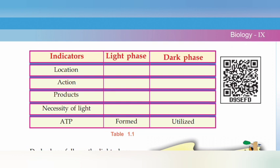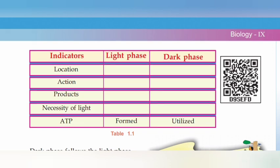What is the product of the light phase? Oxygen and energy, stored in ATP. The light phase produces oxygen and energy. The dark phase produces glucose. The final products of photosynthesis are glucose and oxygen. Necessity of light: the light phase needs light; the dark phase does not need light. ATP is used in the light phase and utilized in the dark phase to produce glucose. ATP stands for adenosine triphosphate.